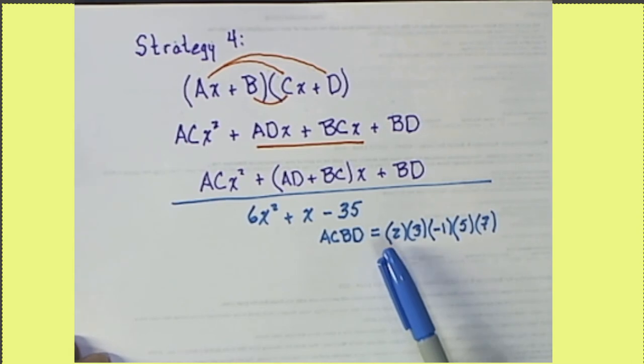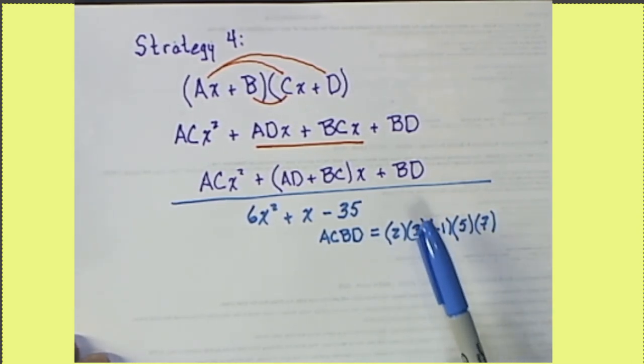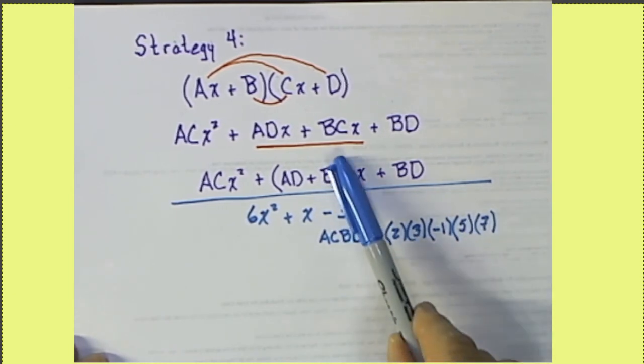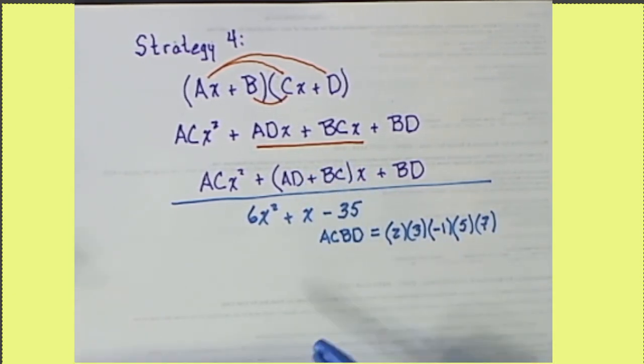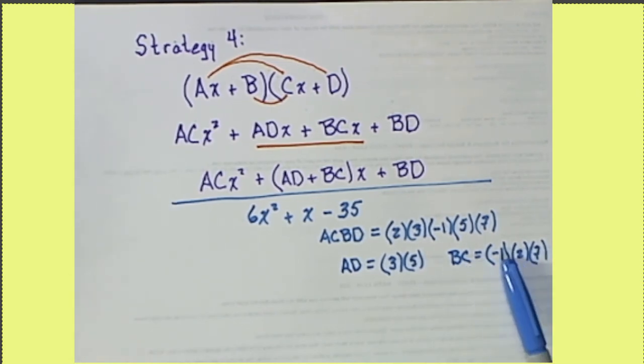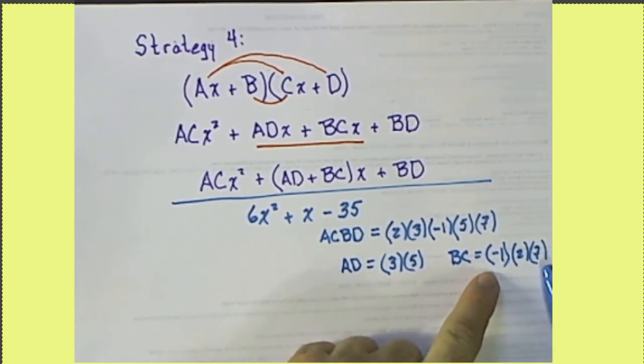Now we need to take some of these factors and call them to be AD, and some of these factors to be BC, so that when they add up, they add up to be 1. So I have to use all of these factors, put some of them over here with AD, the others over here. This will be 15, this will be minus 14, that will add up to be the 1.